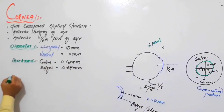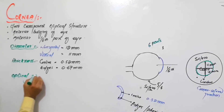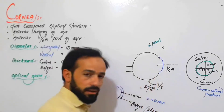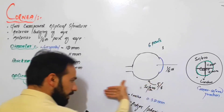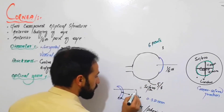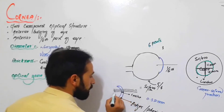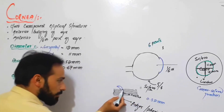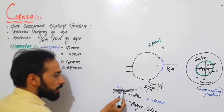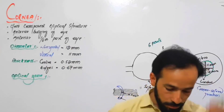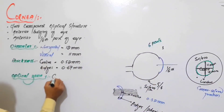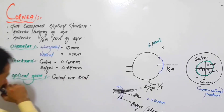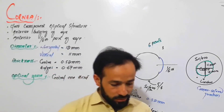Next is the optical zone — the part of the cornea from which light can easily pass. Light can pass from the central one-third of the cornea. The part of the cornea that allows light to pass through it is called the optical zone. So the optical zone is the central one-third of the cornea.